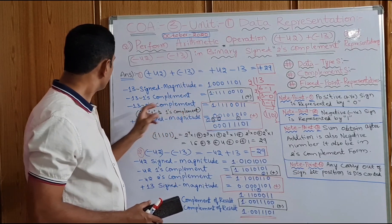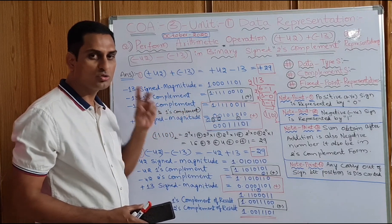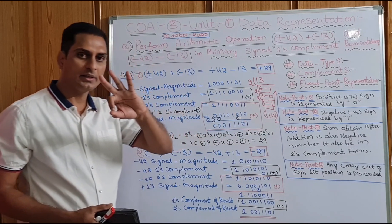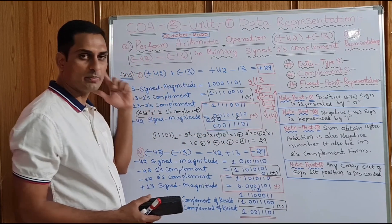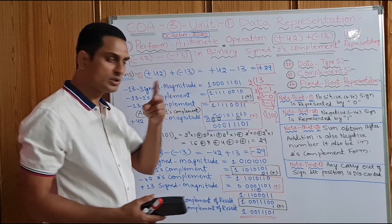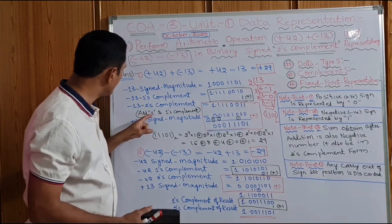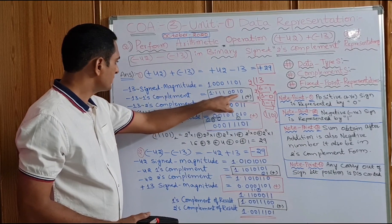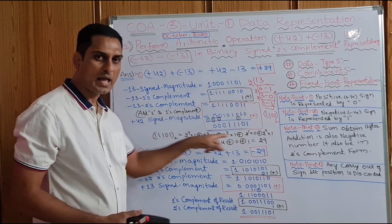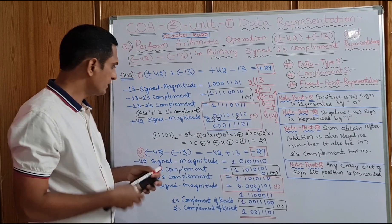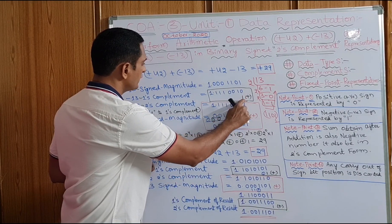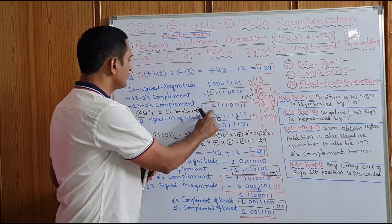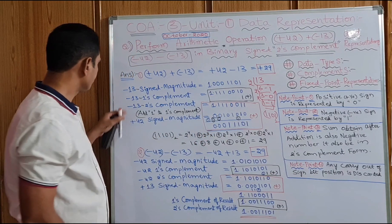Now for signed 2's complement: to get 13's 2's complement, add 1 to the 1's complement. This is 13's 1's complement, marked with black marker. Adding 1 to it, we get 2's complement. The result bits are 1, 1, 1, 0, 0, 1, 1, 1. The sign bit is 1 because it is a negative number. Now 42 is positive — it is represented in only one way.